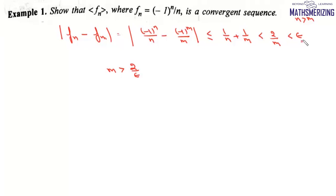For any value of epsilon, however small it may be, we always get a value of m where n is greater than m. That means the sequence {fn} is a Cauchy sequence, and by Cauchy's convergence criteria, every Cauchy sequence is a convergent sequence. So this sequence is convergent.